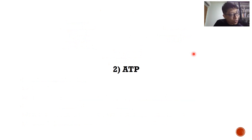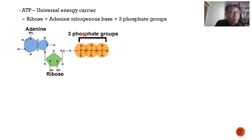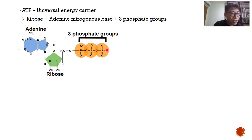Since respiration produces energy in the form of ATP, we need to know what ATP is. ATP stands for adenosine triphosphate. It is an RNA nucleotide — it has a ribose sugar, an adenine nitrogenous base, and three phosphate groups. It is described as a universal energy carrier because most reactions in the cell that require energy make use of ATP, and most organisms also use ATP. That is why it is known as the universal energy carrier.